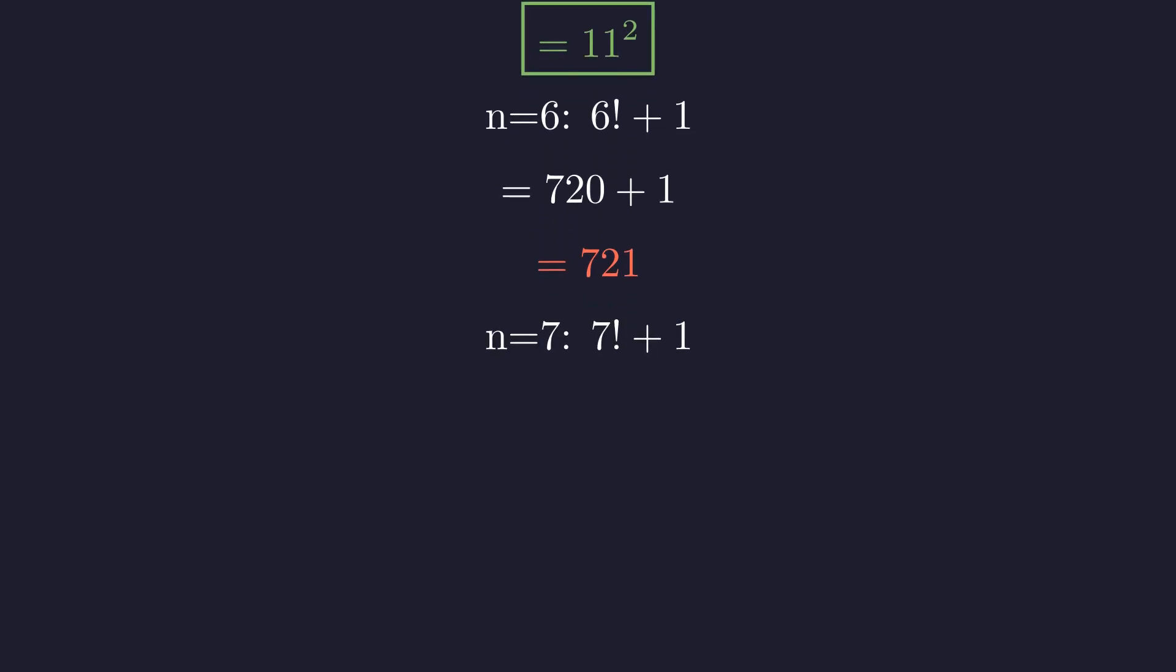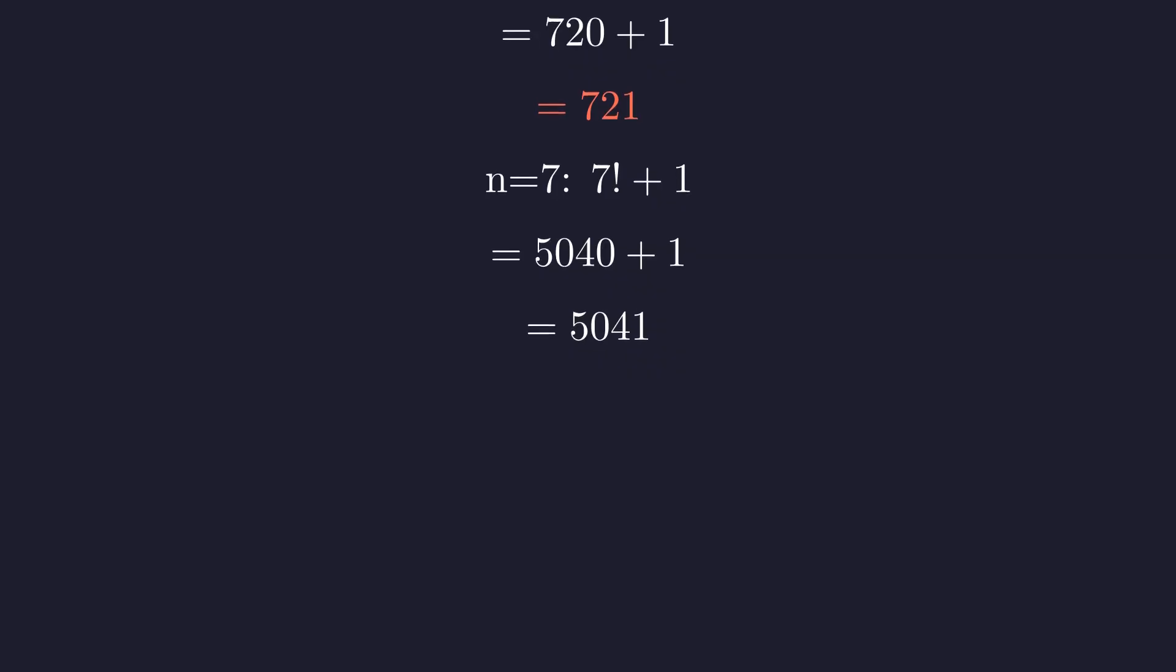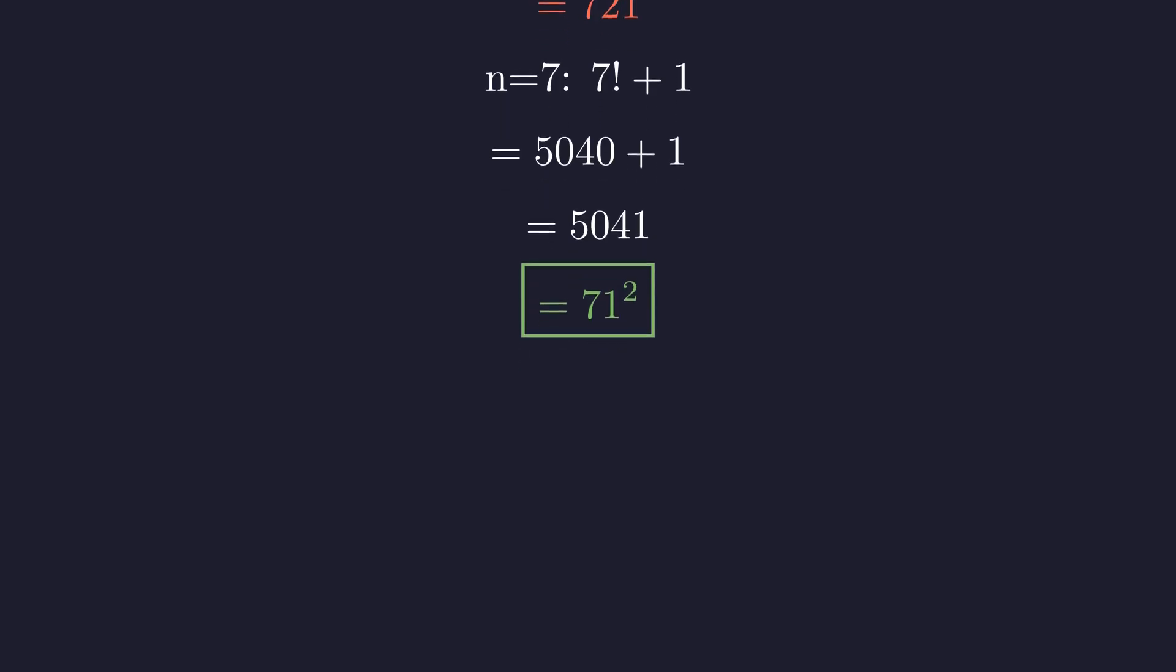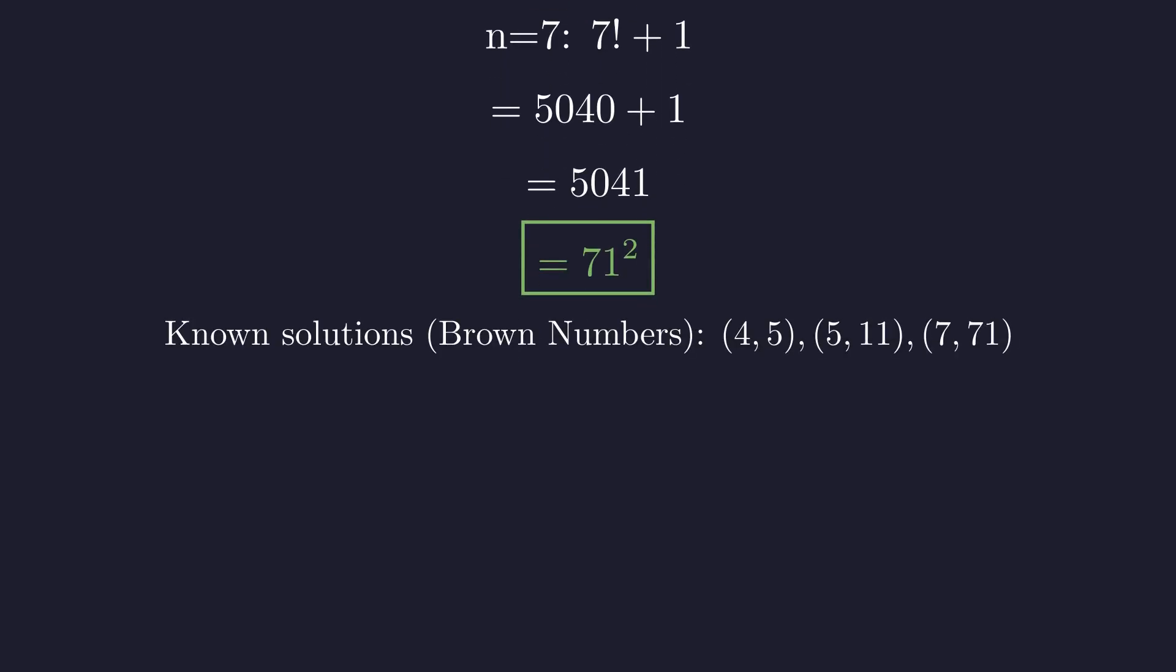And for n equals 7, 7 factorial is 5040. Adding 1 gives 5041, which is exactly 71 squared, a third solution. These three pairs of n and m are the only solutions that have ever been found. They are sometimes called brown numbers.